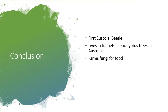To summarize, Austroplatypus incompertus is the first known eusocial beetle — all other known eusocial insects belong to the order Hymenoptera, making this species very unique with no others found so far. Most tree-dwelling beetles colonize dead or dying trees, while this species lives in live, healthy eucalyptus trees. It also farms fungi as its sole source of food.